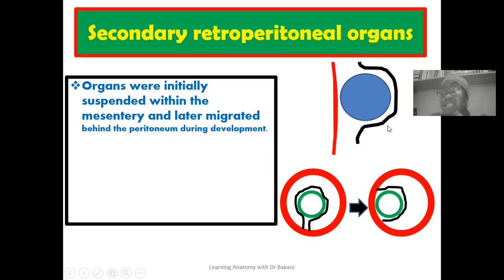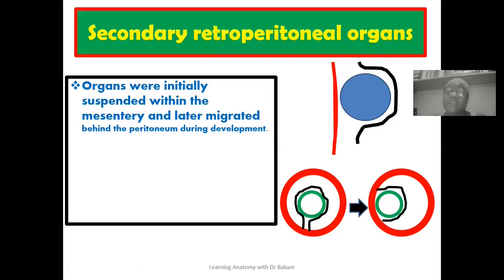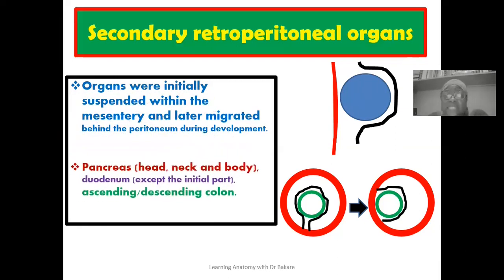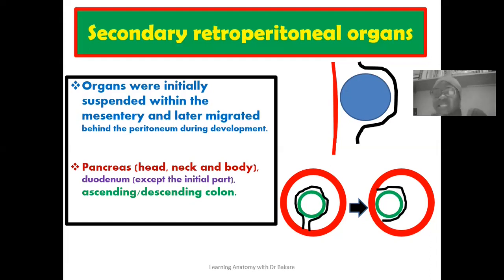This organ is located behind the peritoneum, making it a retroperitoneal presentation. Because at the initial stage it presented an intraperitoneal presentation before being transformed during embryogenesis into a retroperitoneal presentation, it is secondary retroperitoneal. Organs exhibiting secondary retroperitoneal presentations include the pancreas — specifically the head, neck, and body — while the tail of the pancreas is intraperitoneal. Also the duodenum, except the initial two centimeters, and the ascending and descending colon are secondary retroperitoneal.